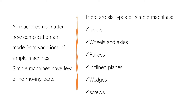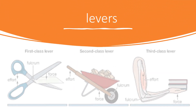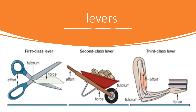There are six types of simple machines: levers, wheels and axles, pulleys, inclined planes, wedges, and screws.